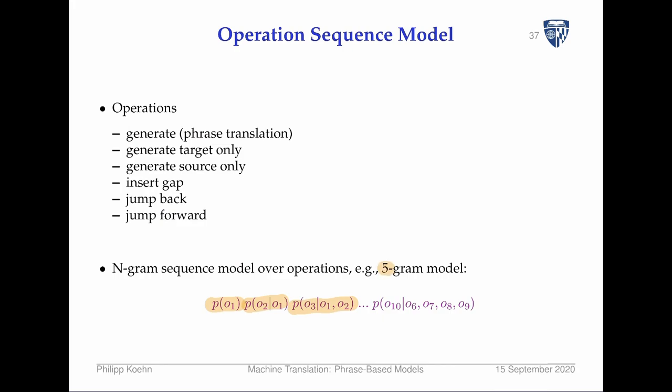Here we're using a 5-gram model — so when we come down to the 10th operation, we condition it on the previous four: operations 06, 07, 08, 09. You'll clearly have flashbacks to language modeling here — we're using exactly the same technology.